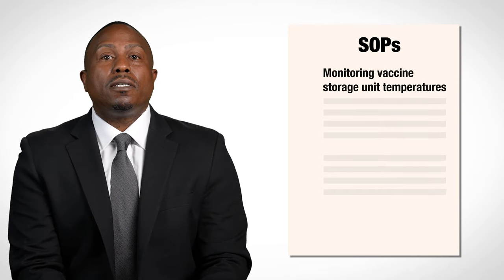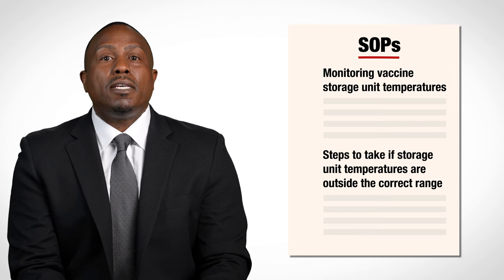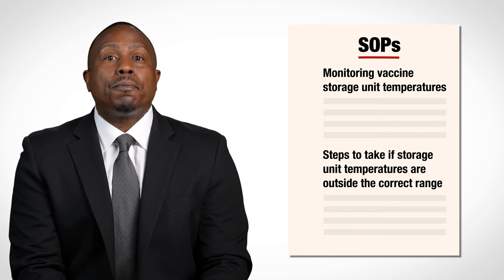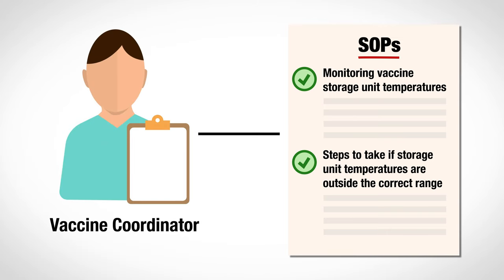Each facility should develop and maintain clearly written, detailed, and up-to-date standard operating procedures, or SOP, on vaccine storage practices. These SOPs should include instructions for monitoring vaccine storage unit temperatures and the steps to take if storage unit temperatures are outside the correct range. A vaccine coordinator should be assigned and trained on your facility's SOPs, including monitoring storage unit temperatures.